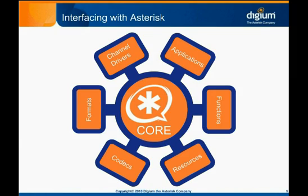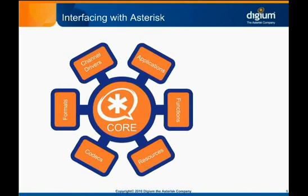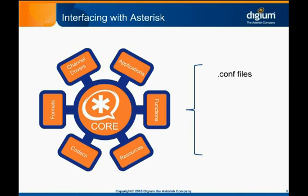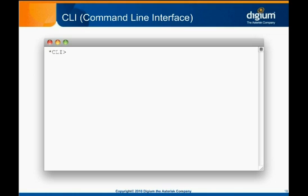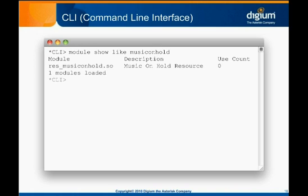Now that we've discussed Asterisk's modular design and introduced several key module types, let's talk about the different ways you can interface with Asterisk. We already know that Asterisk reads configuration files edited by an administrator, but there are several other ways of controlling Asterisk's behavior, both scripted and in real-time. The most common way to observe Asterisk status and control its behavior on the fly is via the CLI, or command line interface. The CLI provides a console similar to the Linux console where you can issue commands and view results. Common commands are to show which VoIP devices are currently registered, what calls are active on the system, and to reload configuration. System help is also available.